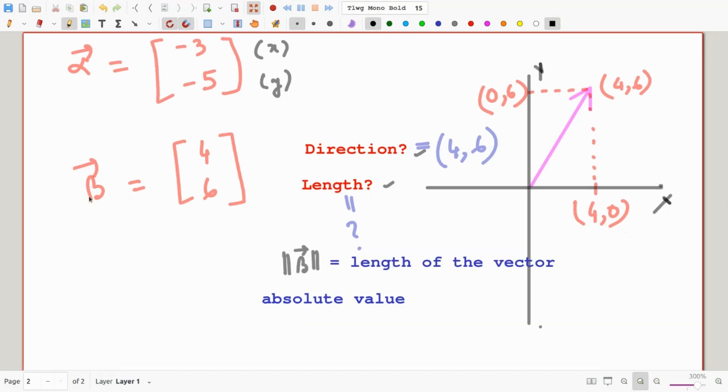Going back to our vector beta, we have its x component is 4 and its y component is 6. So that simply means we are moving over 4 in the positive x direction and up 6 in the positive y direction. And now we have formed a right angle triangle and it turns out that the length of this vector is just the hypotenuse of this triangle.